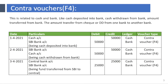Contra Voucher F4. This is related to cash and bank — like cash deposited into bank, cash withdrawn from bank, amount transferred from bank, or amount transferred by cheque or DD from one bank to another bank.